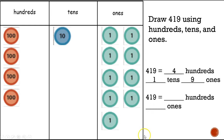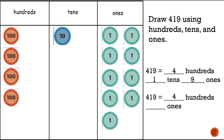Down here they're getting tricky again — they took out the tens. How many hundreds? Four. And how many ones? Nineteen. Good job.